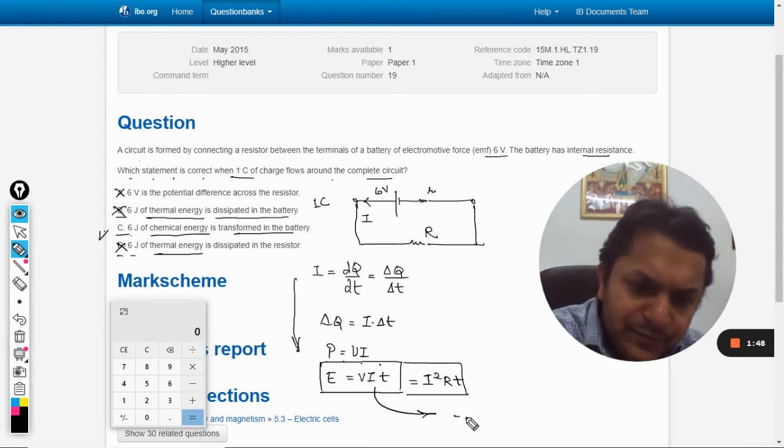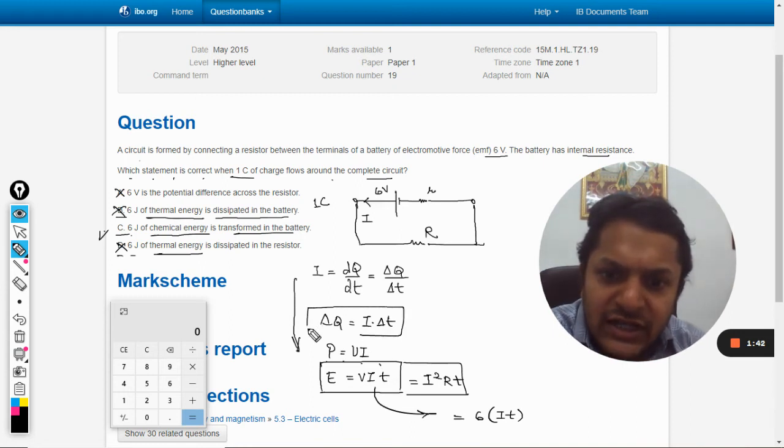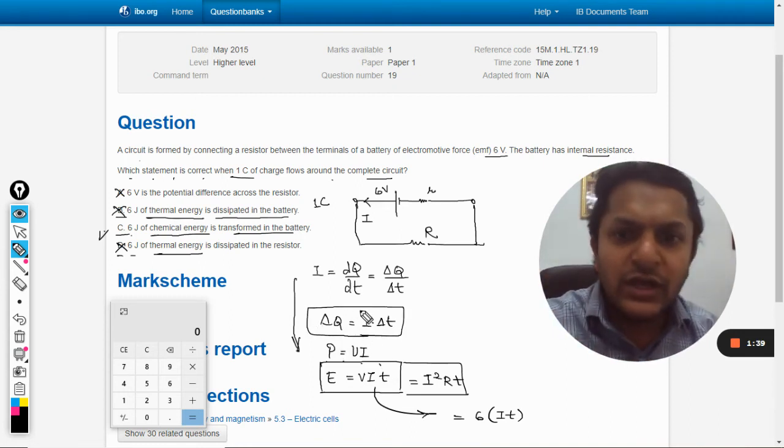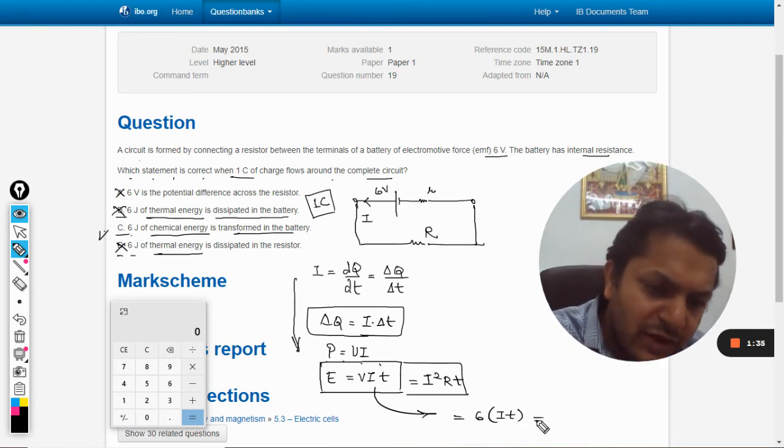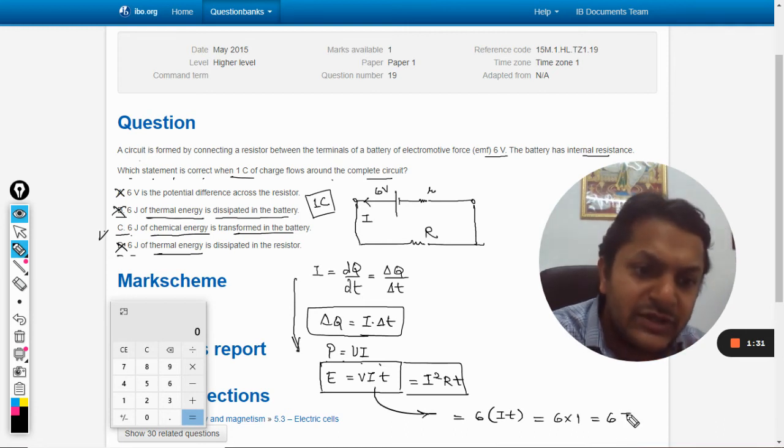We are using now VIt. So what is the voltage? 6. And what is this I into t? I into t is equal to the total charge that has flown, and it is given to be one coulomb. So we can substitute one here. It will be six into one, so the answer should come out to be six joule.